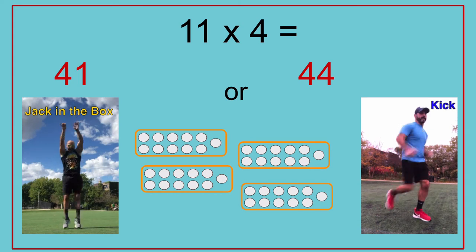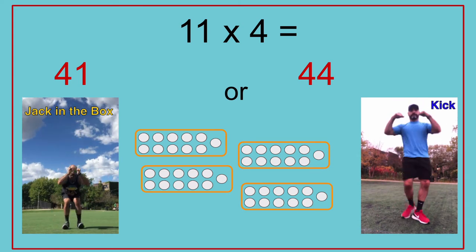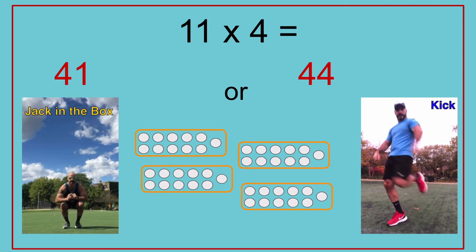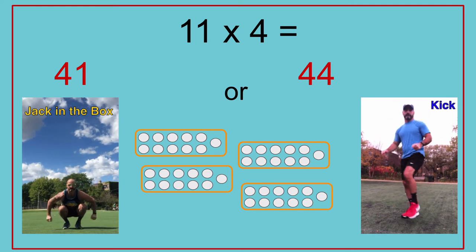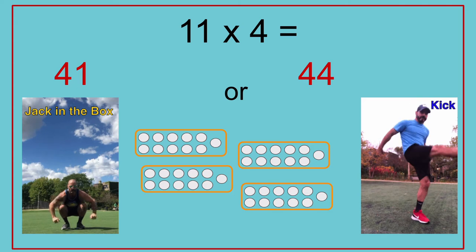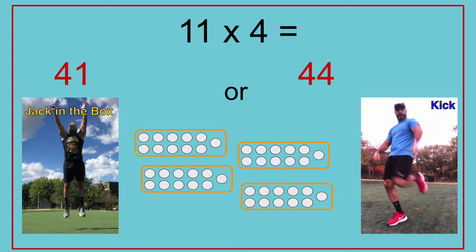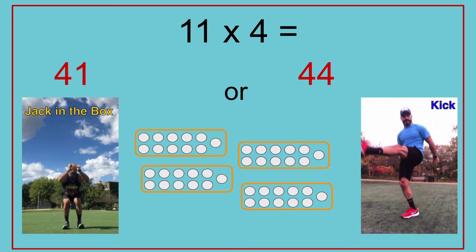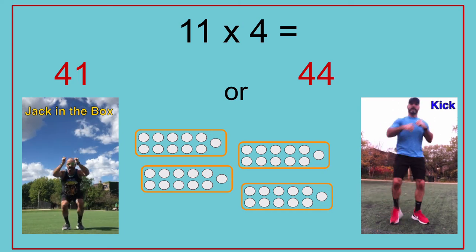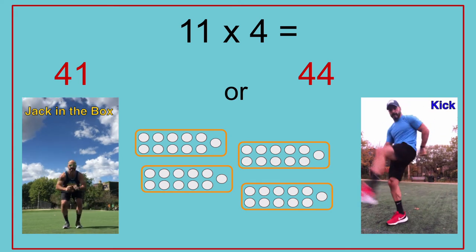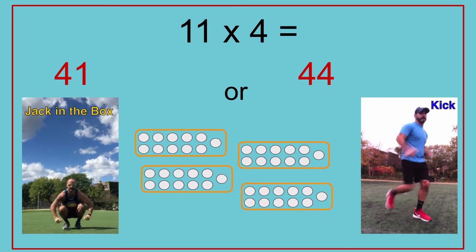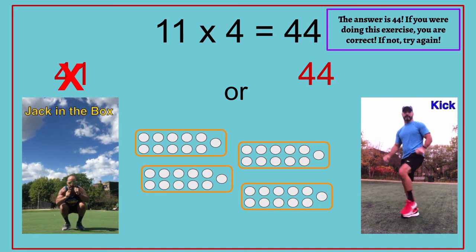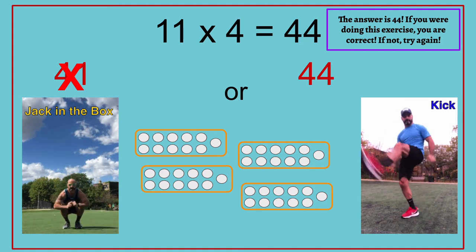11 times 4 equals — 41 or 44? The answer is 44. If you are doing this exercise, you are correct. If not, try again. 11 times 4 equals 44.